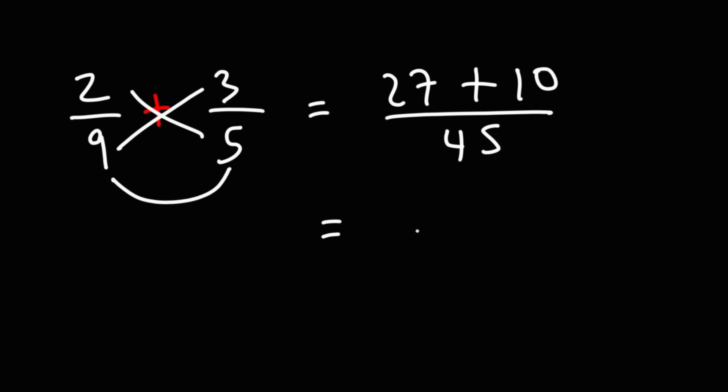And then we'll add 27 plus 10, which is 37. And so that's going to give us the answer, 37 over 45. So that's how you can add two fractions using the butterfly method.